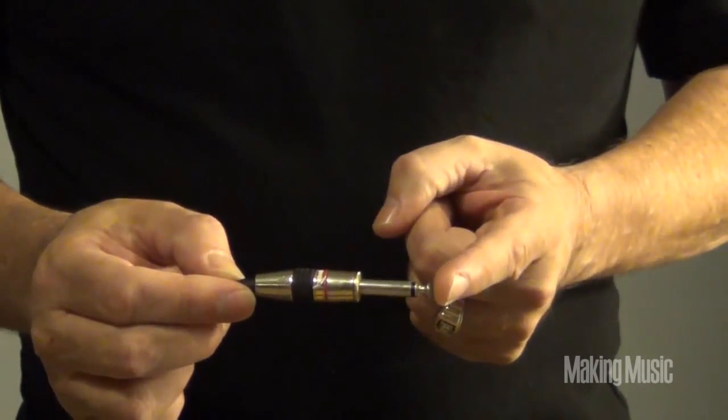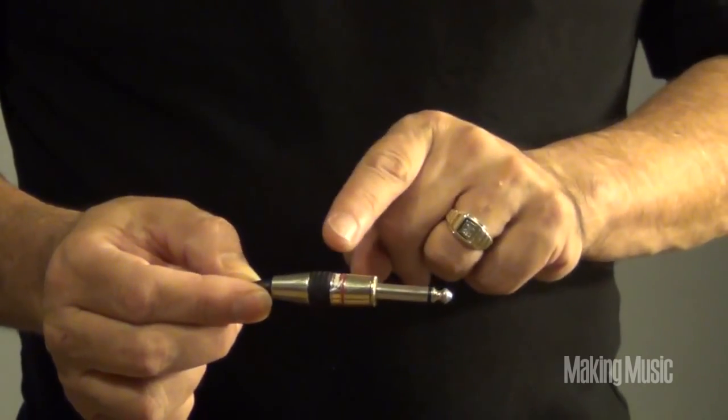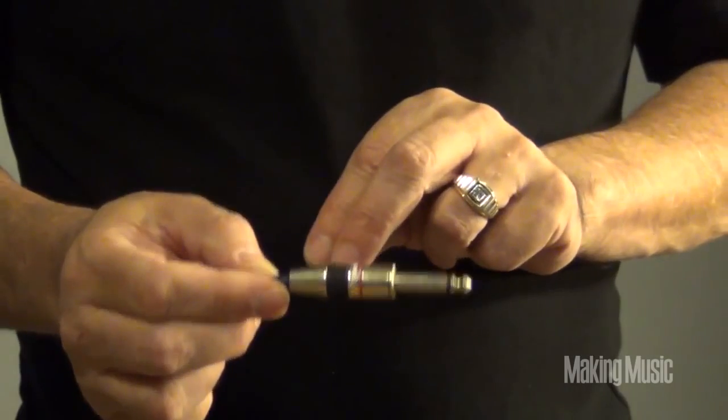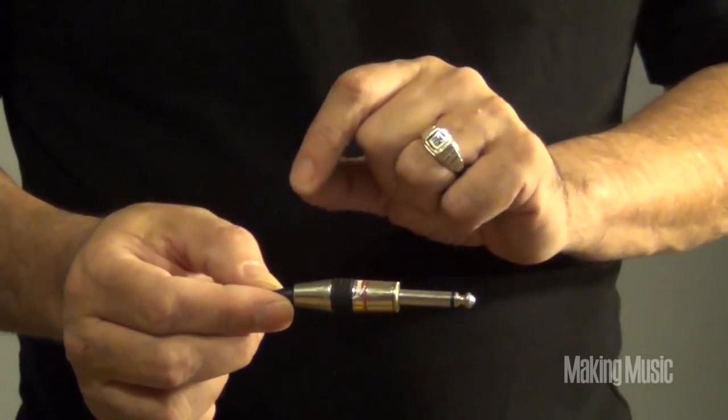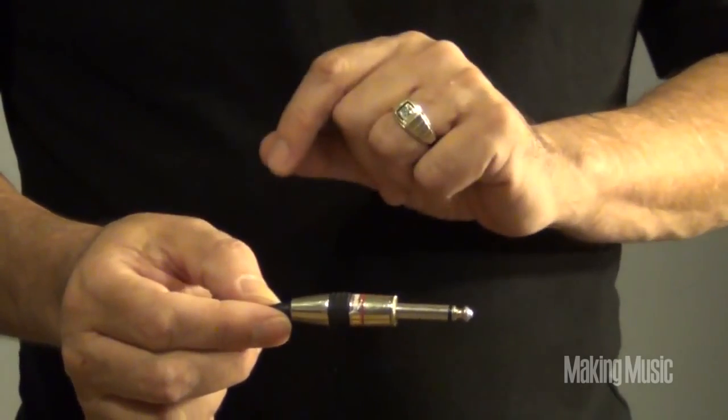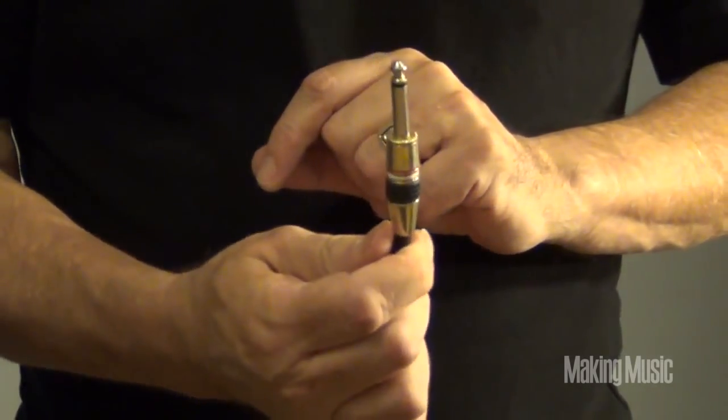It has a tip and a sleeve. If you run more than 17.5 feet of this unbalanced cable, you'll pick up radio frequencies. That's that buzz you hear, that's the 60-cycle hum. Sometimes you'll get radio stations. Standard patch cord.